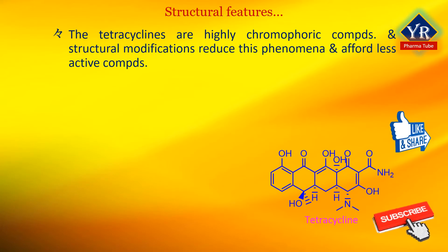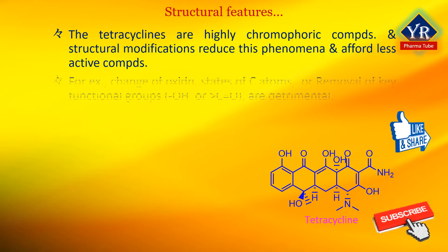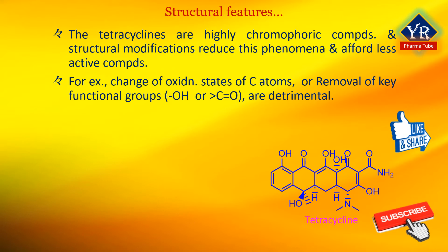The tetracyclines are highly chromophoric compounds, and structural modifications that reduce the magnitude of this phenomenon generally afford inferior compounds. For example, the change of oxidation states of tetracyclic carbon atoms or the removal of certain key functional moieties — mostly hydroxyl or carbonyl moieties — is detrimental.